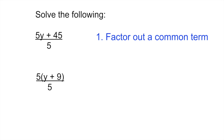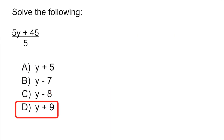5 times y is 5y, and 5 times 9 is 45, so the factoring checks out. Now it's easy to do the next step: simplify the equation. You have a 5 on top and a 5 on the bottom, so you can cancel those out. Your answer is y plus 9, which is letter D.